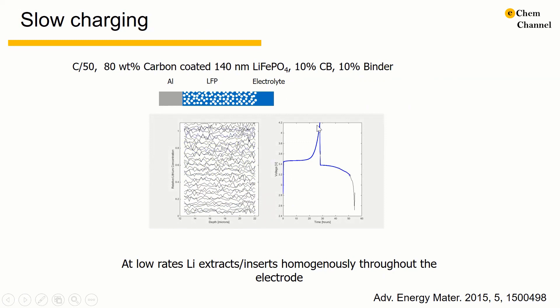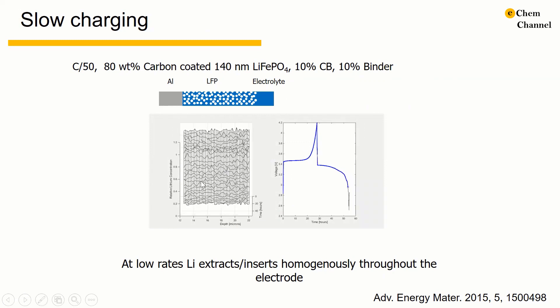The relative lithium concentration in the LFP is measured as a function of depth. When the voltage increases from 2.8 to 4.2 volts, the lithium concentration decreases gradually, and when the voltage decreases again, the lithium ion concentration increases.